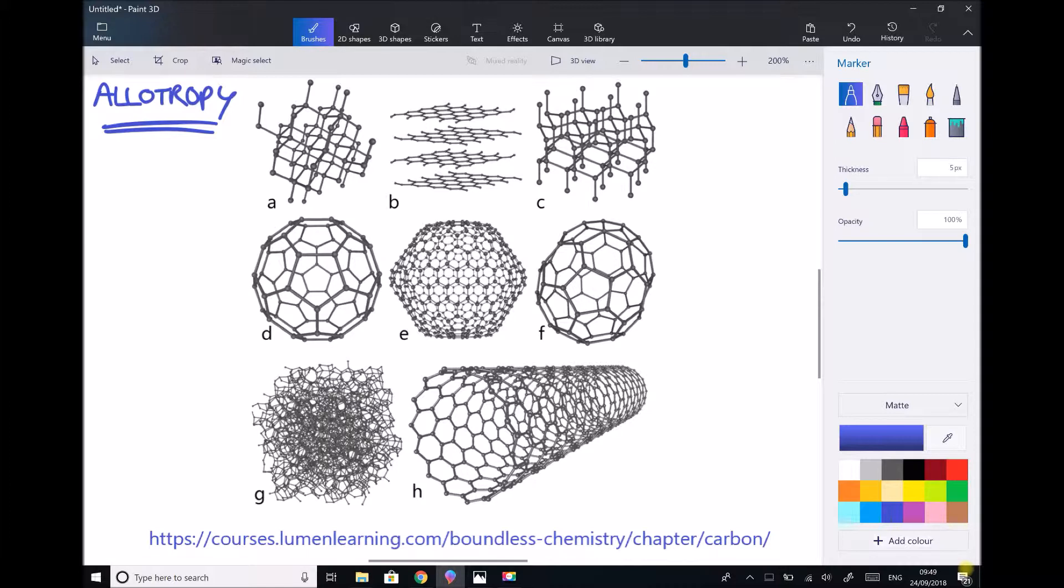Carbon is a good place to start because there's actually 8 allotropes of carbon, there's 8 different structures of carbon. So just before we look at some of these I just want to credit this resource or this image to Lumen Learning. I found this information and these images through Google and some of the information on Lumen Learning about the allotropes of carbon is exceptional.